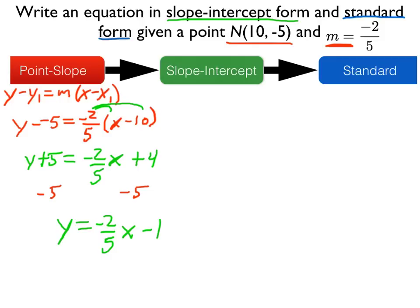And so now we've achieved part of our task. It says write an equation in slope-intercept form. We've done that. There's our slope-intercept form. However, we also need to find standard form. So now let's do that next.